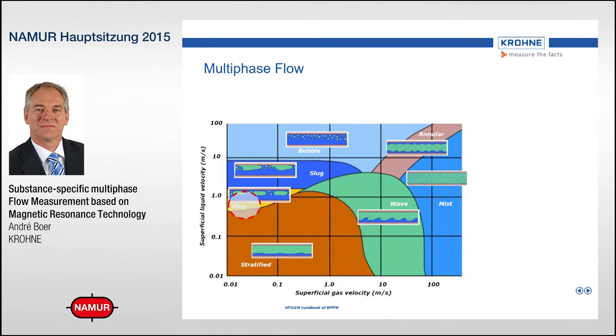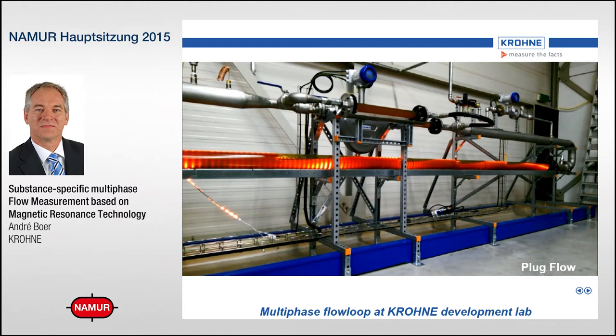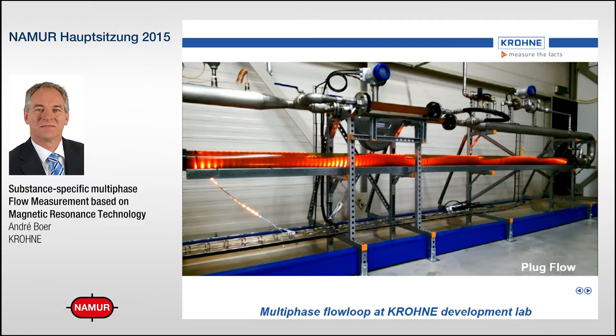However, when you increase the liquid velocity, the flow regime changes from this rather stable stratified flow into a more dynamic plug type of flow. You can see the transport of the individual fluids, with more interaction — plugs of gas flowing through the pipe. Obviously, trying to measure this is already quite a challenge.